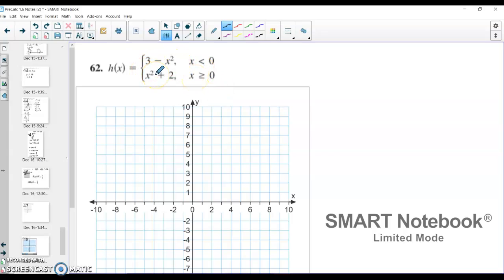So starting with my top function, I have 3 minus x squared. And making my xy table, I'm going to choose values.